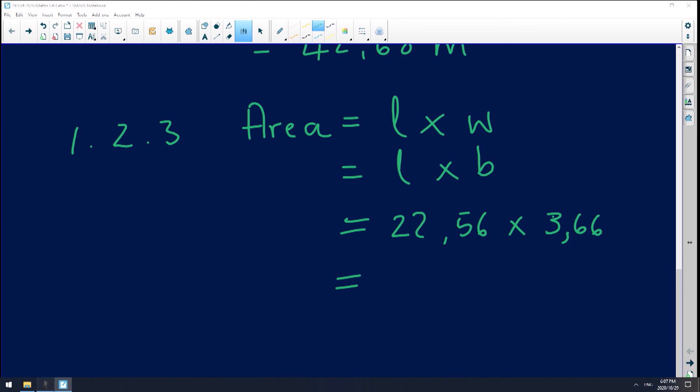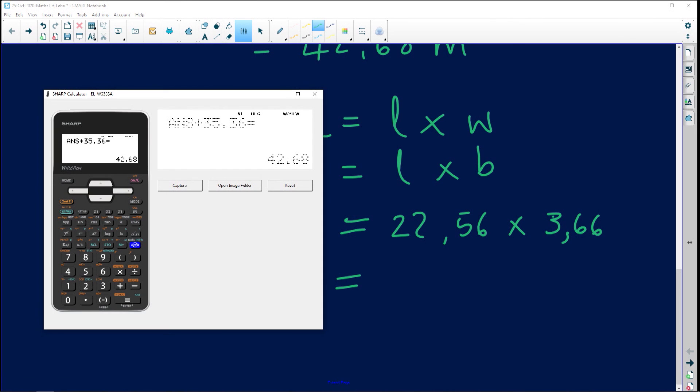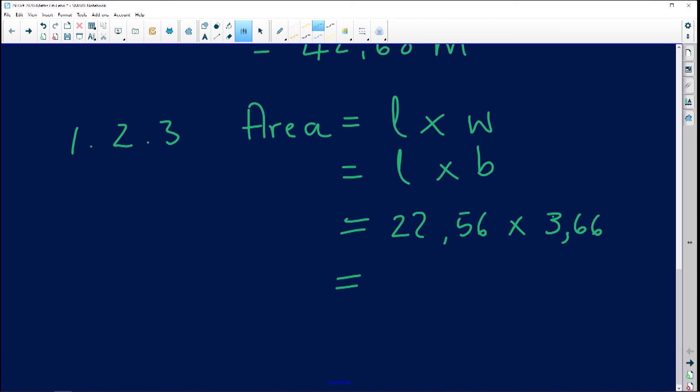Let's go put that in our calculator. Guys, know how to use your calculator. Sometimes you're losing marks because you don't know how to use your calculator. 3.66 again. Okay. So that's 82.57. I'm rounding it off to two decimal places. 82.57. And that's going to be in meter square as they've told us. Okay. Stunning.